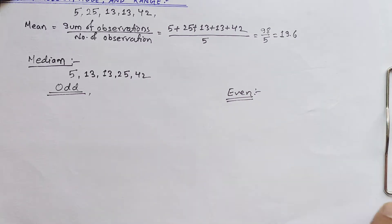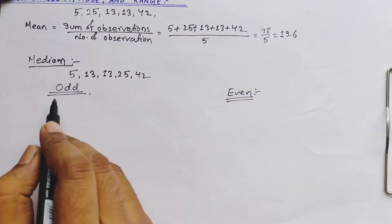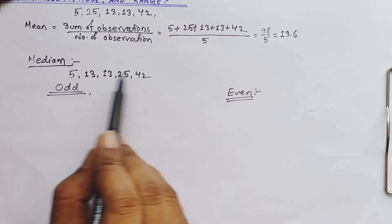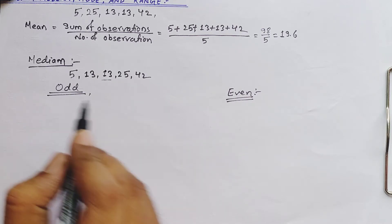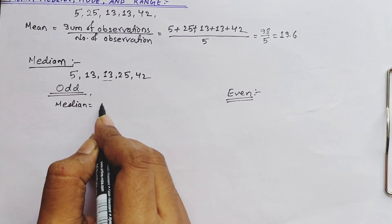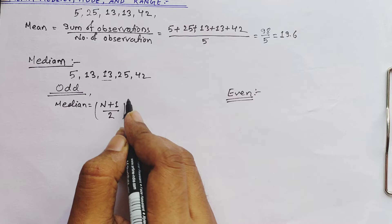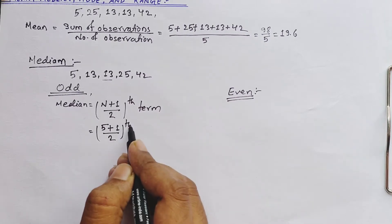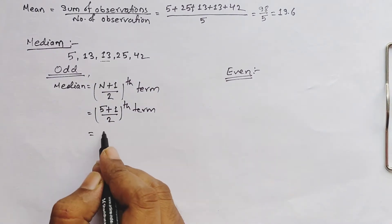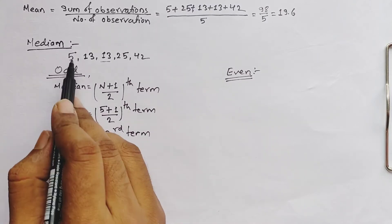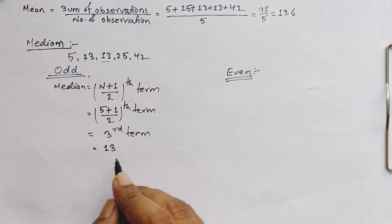When the number of observations is odd, it is very easy — the median is simply the middle term. We have first, second, third, fourth, fifth terms, so the third is the middle. Using the formula: median equals the (n+1)/2 th term. With n=5: (5+1)/2 = 6/2 = 3rd term. The third term in our arranged list is 13, so our median is 13.